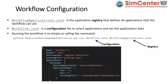The workflow can be configured using two files: the registry, where different applications are registered for use in the workflow, and a configuration file for the workflow itself. To run it, you call the Python script for the regional earthquake simulation, passing in the configuration file and the registry file.